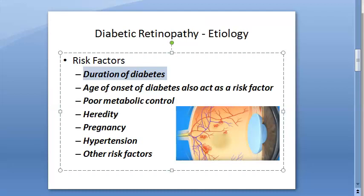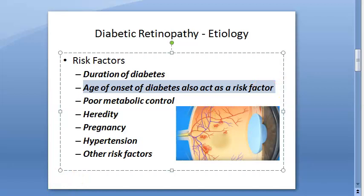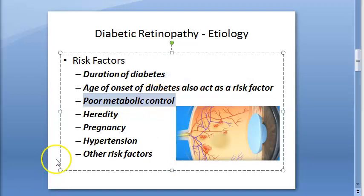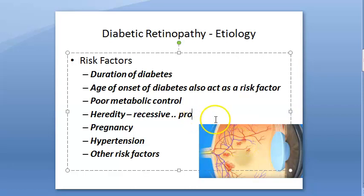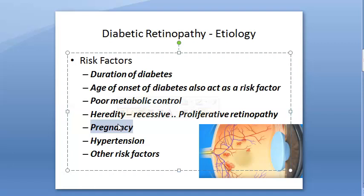This duration is taken after the onset of puberty - if that duration is more, the retinopathy risk is more. The age of onset of diabetes also acts as a risk factor; after puberty, from when it comes, the duration that matters. Poor metabolic control - obviously how people are maintaining their sugar levels. Heredity - it is a recessive trait and is more seen in proliferative retinopathy. Then pregnancy - some people can get gestational diabetes mellitus, which can accelerate the retinopathy.